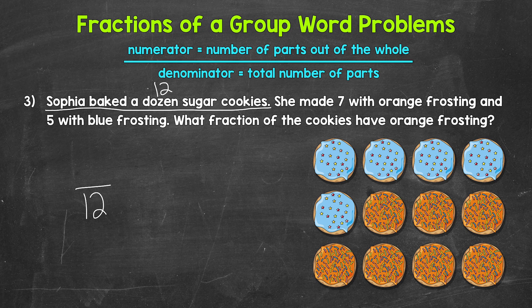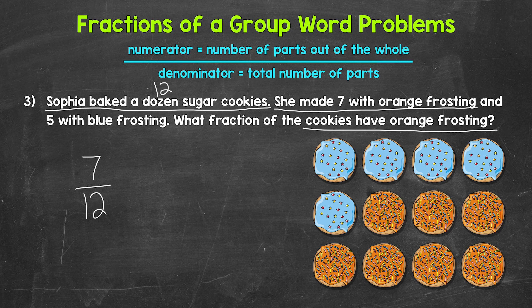Now we need the numerator. We are looking for the cookies that have orange frosting — how many cookies were made with orange frosting? Seven were made with orange frosting, so seven is our numerator. Seven out of the 12 cookies have orange frosting, so our fraction is seven twelfths. Seven twelfths of the cookies have orange frosting.